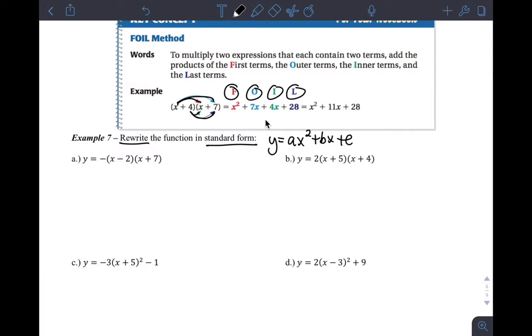So standard form is y equals ax² + bx + c. You need to know what form you're looking at. This is again intercept form, both of these. And this is vertex form.